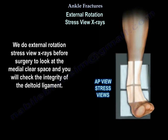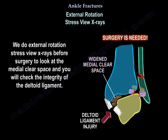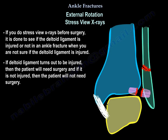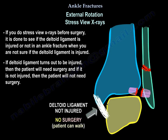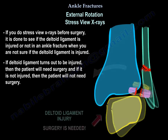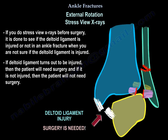We perform the external rotation stress view before surgery to look at the medial clear space and check the integrity of the deltoid ligament. It is done to see if the deltoid ligament is injured when you are not sure. If it turns out to be injured, the patient will need surgery. If it is not injured, the patient will not need surgery.